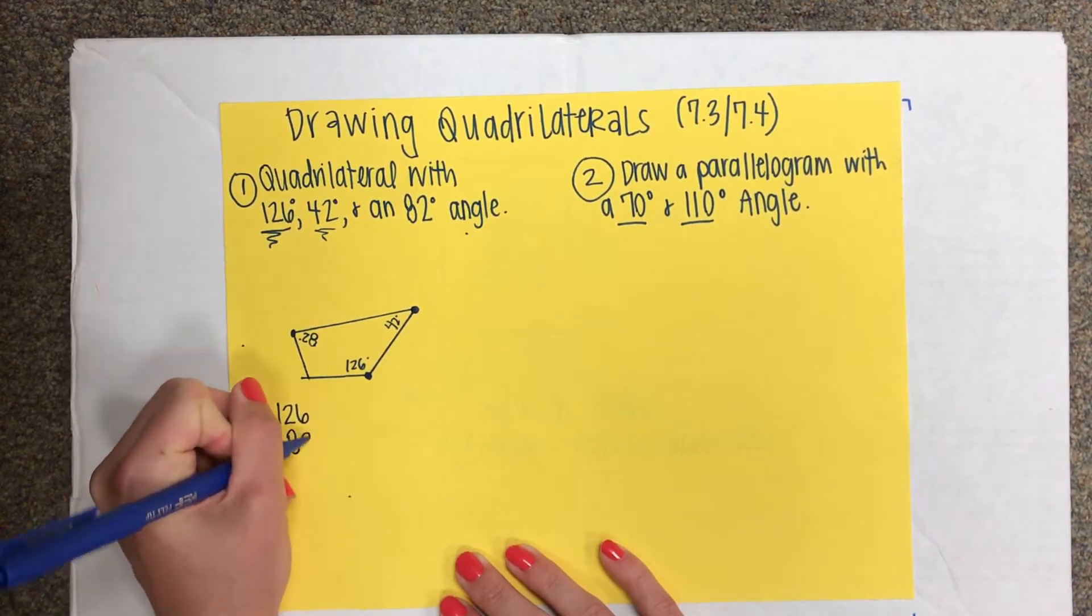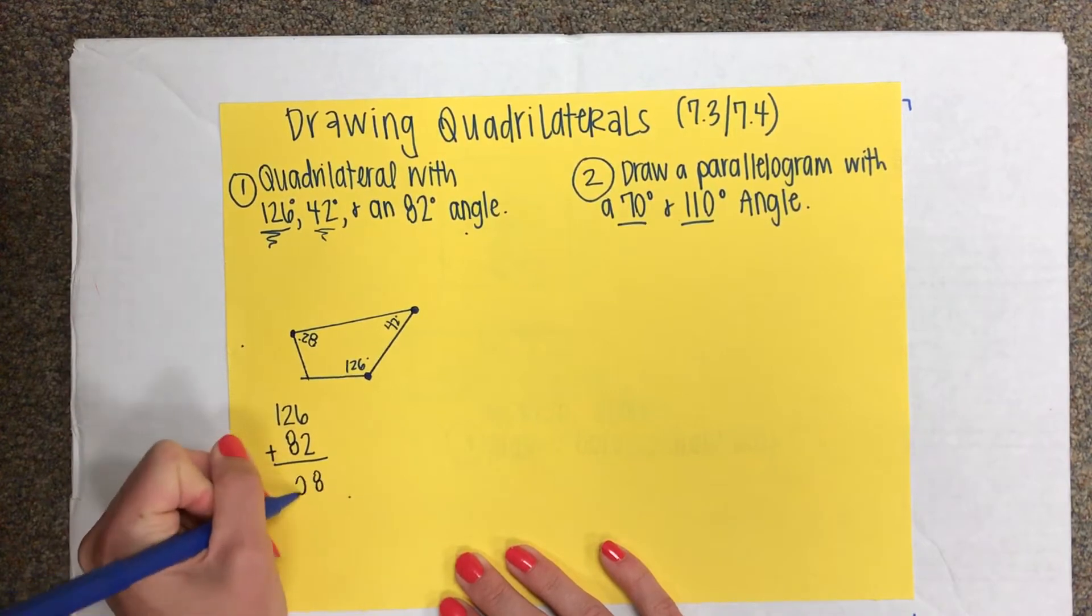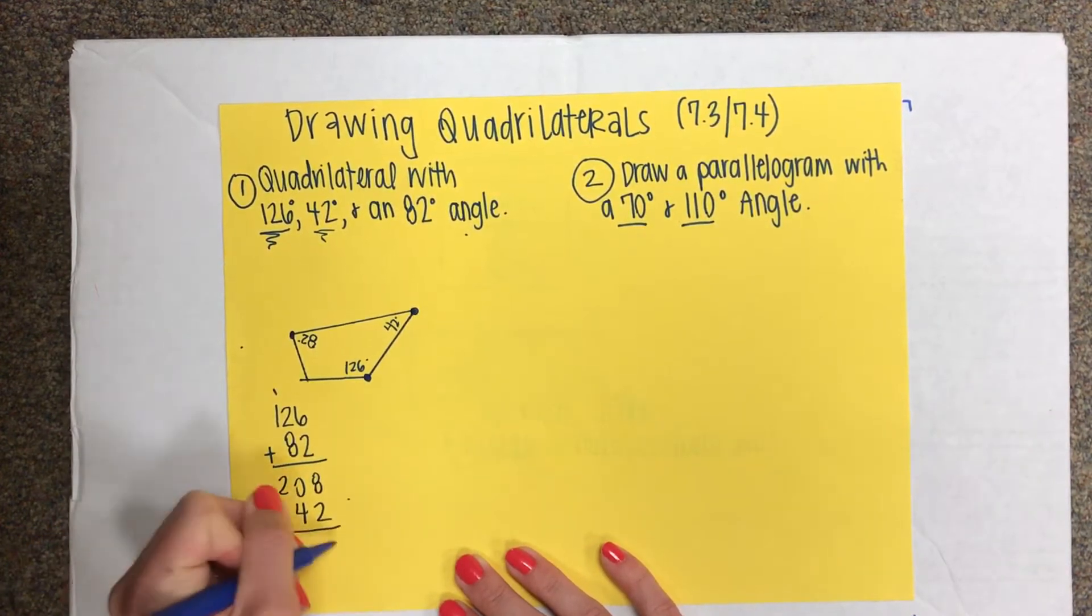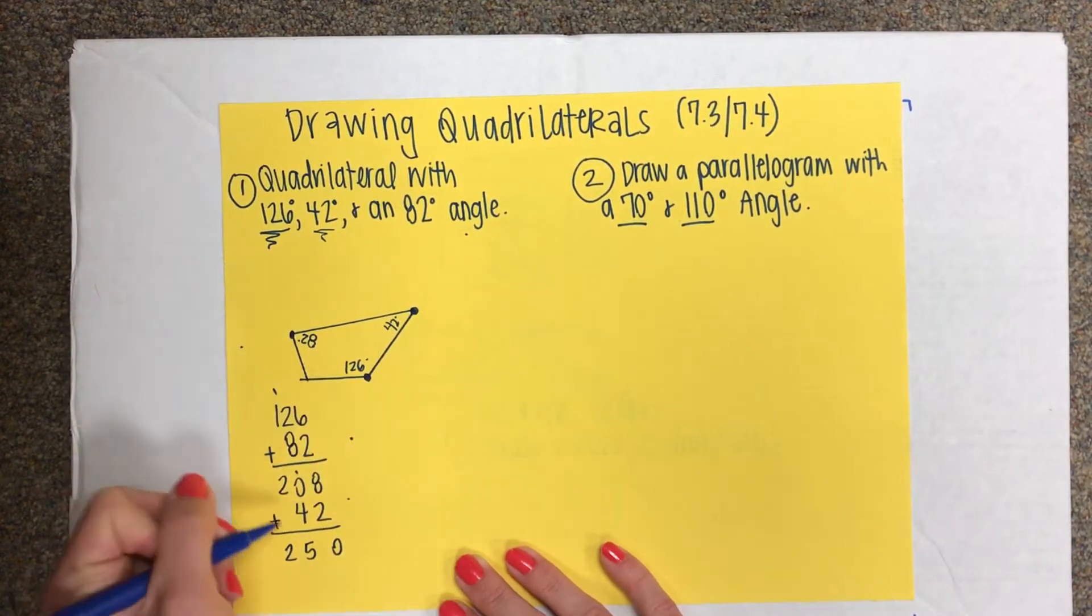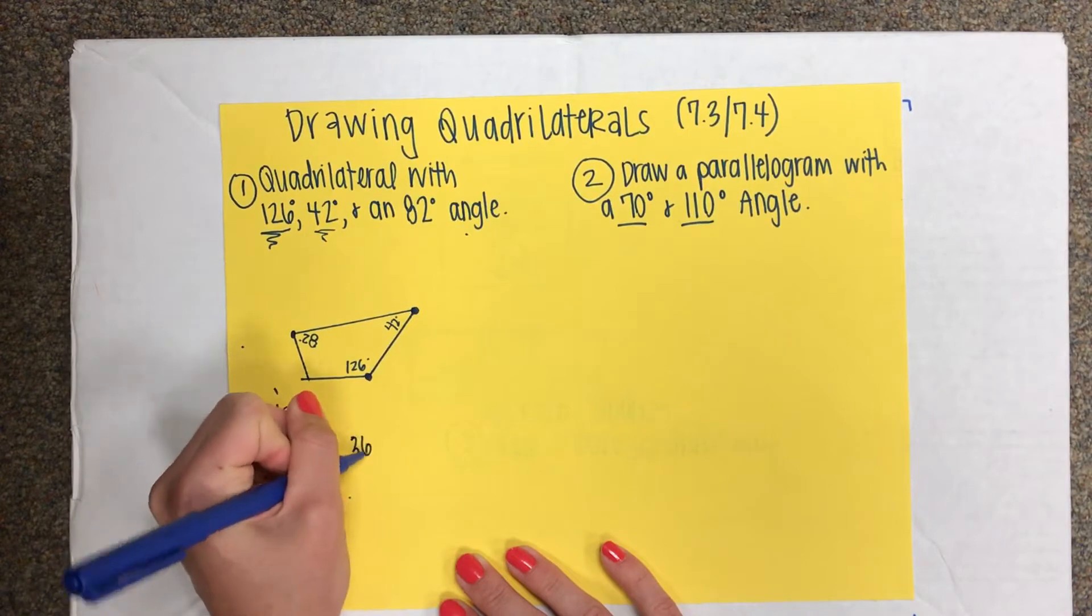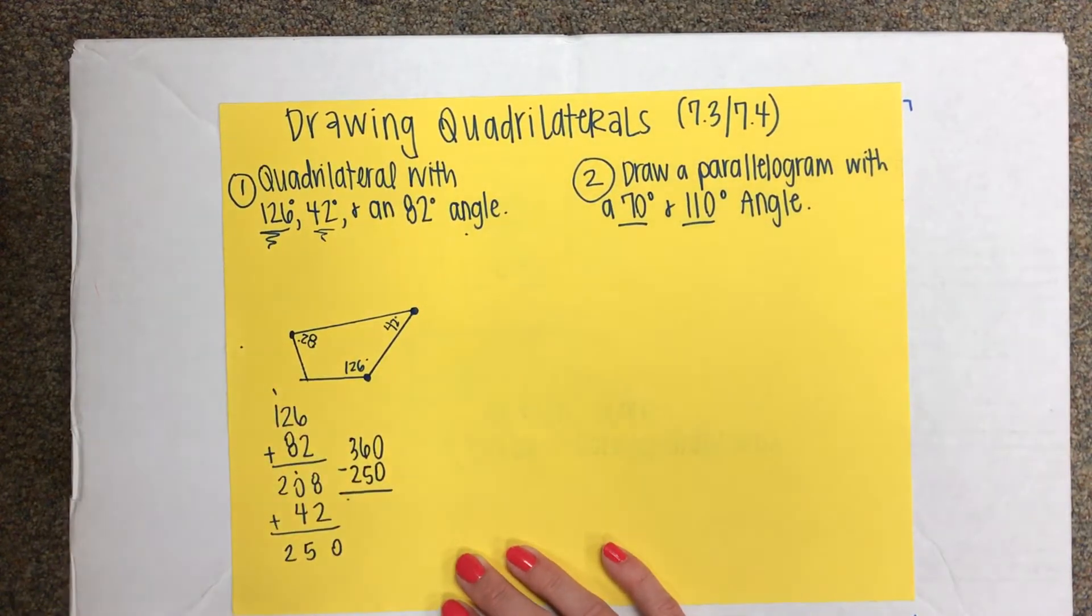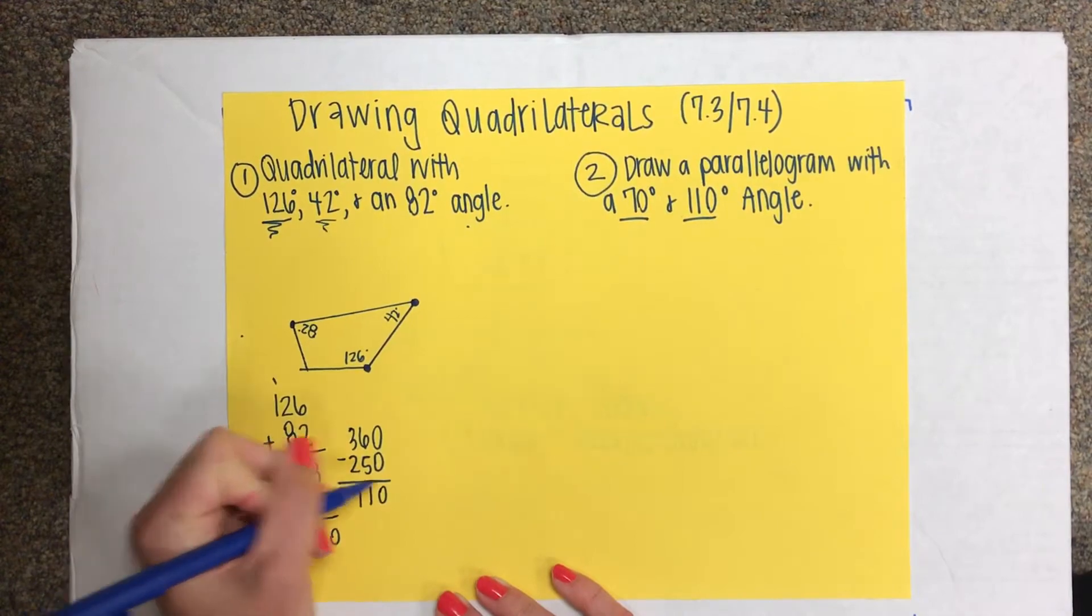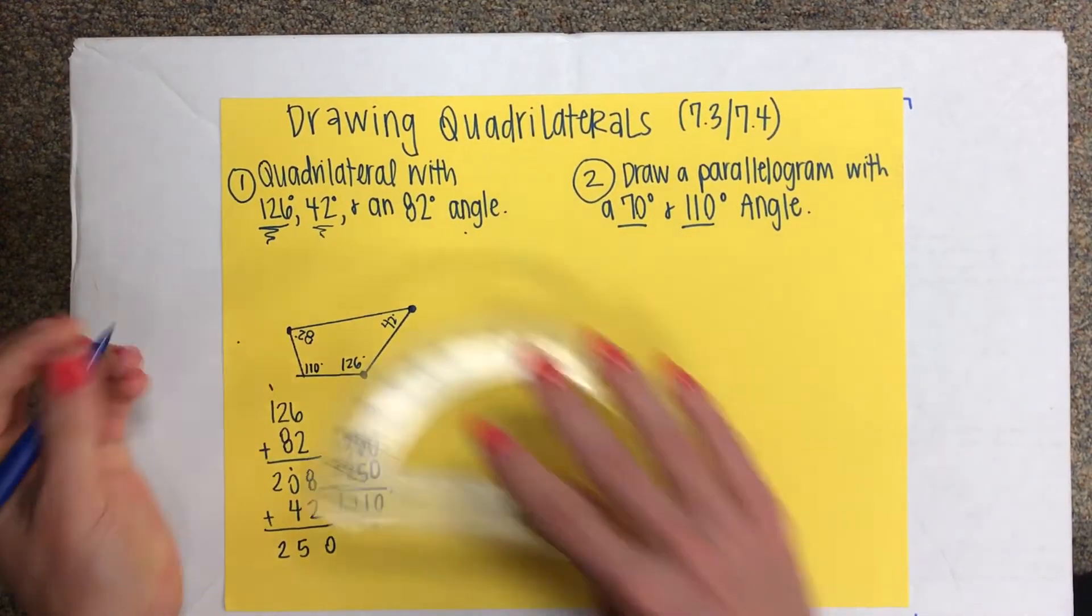To find the leftover degrees, I just add 126, plus 82, plus 42, that's 8, 10, 20, and then another 42, will be 10, 5, and 2. And then I just take my 250 that I just came up with and subtract it from 360 this time. Just because now you've got a quadrilateral, which means it's equal to 360 degrees. 0, 1, and 1. So this last angle should be 110 degrees.